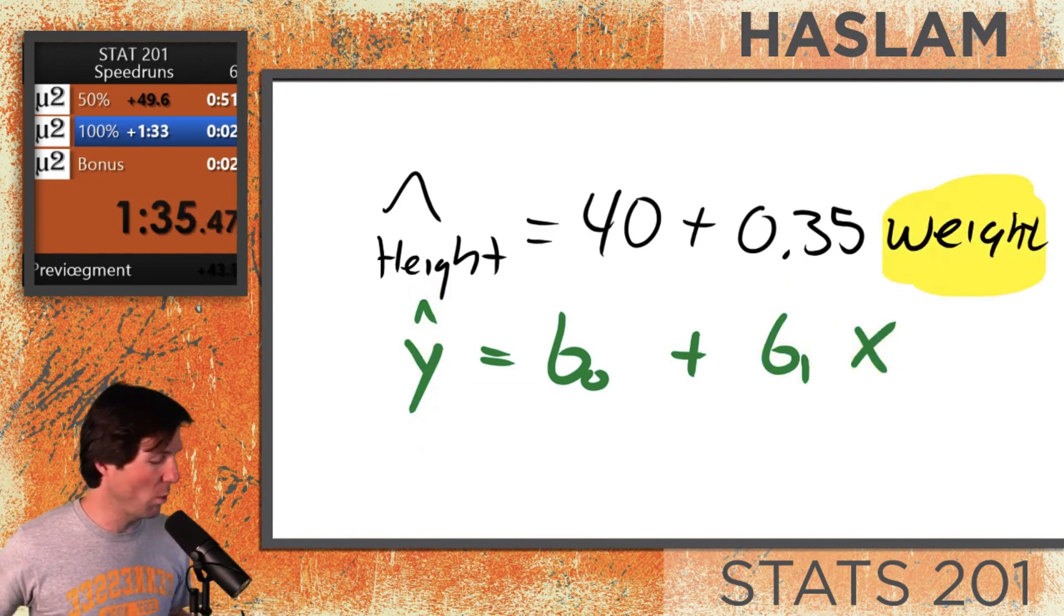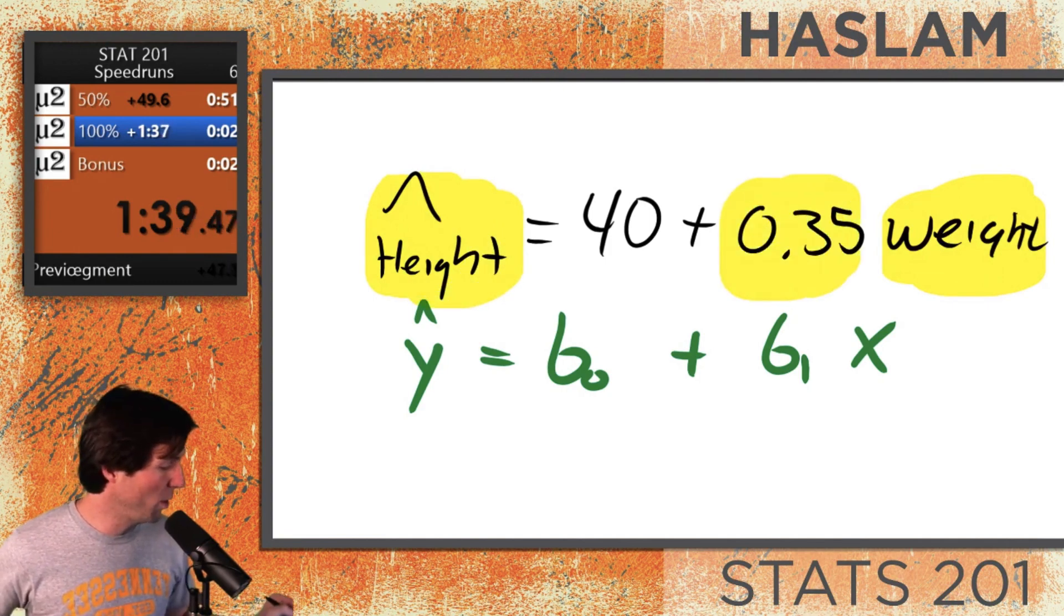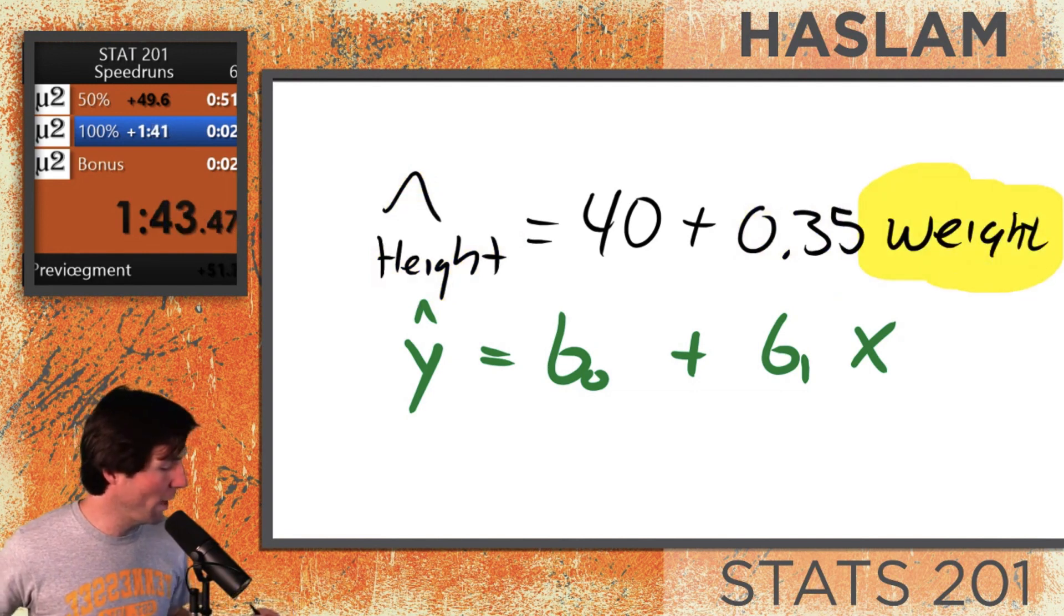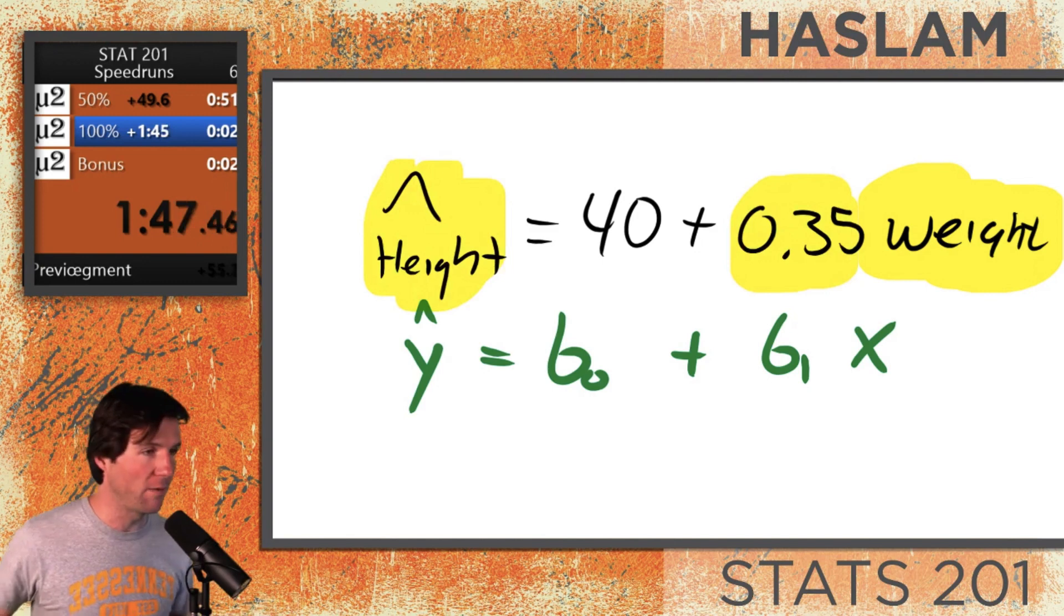So listen now as I do the context of it. For each one pound increase in weight, I expect somebody's height to increase by 0.35 inches. For each one pound increase in weight, I expect someone's height to increase by 0.35 inches. And that is the interpretation of the slope right here.